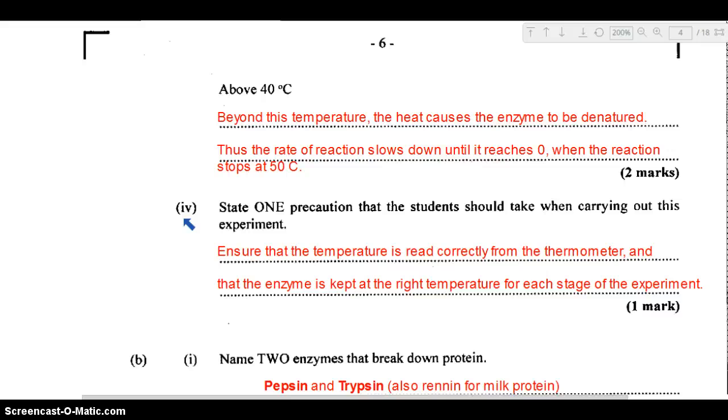Part four: state one precaution that the student should take when carrying out this experiment. You need to be monitoring the temperature closely. Ensure that you're reading the temperature value on the thermometer properly and that the enzyme is kept at the right temperature for each stage of the experiment.